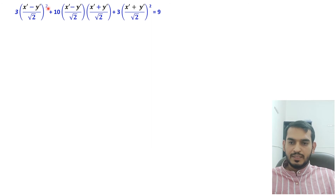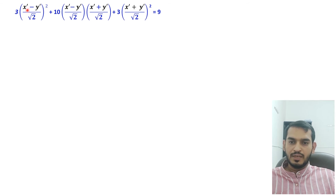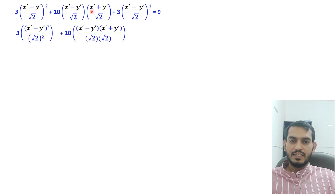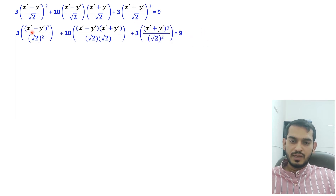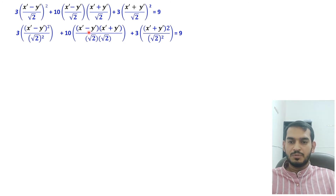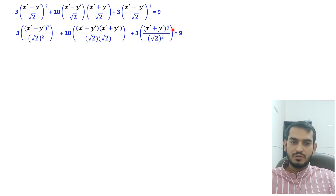Splitting the numerator and denominator into squares: the first term is in the form (a − b)², the second term's numerator is in the form (a − b)(a + b), and the third term is in the form (a + b)². We will use these standard algebraic identities to expand each term.